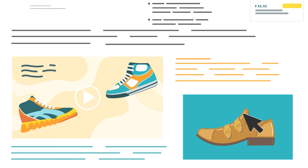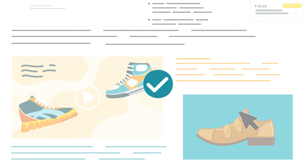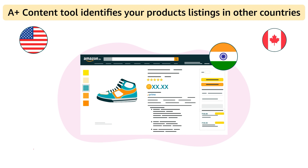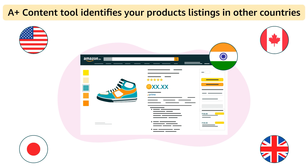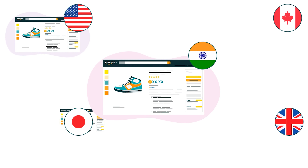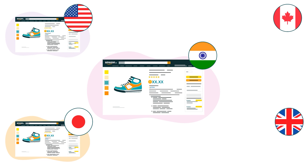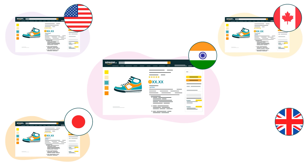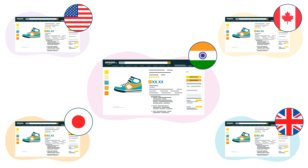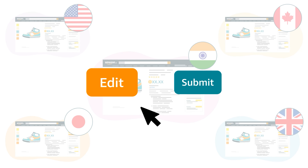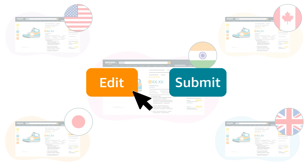Cross-Country Copying: When content is approved, the A-plus content tool identifies other countries where you are doing business with the same product and copies drafts of the content into your account in those countries, saving your efforts of recreating an A-plus template in each country. You may edit these drafts and submit for approval.